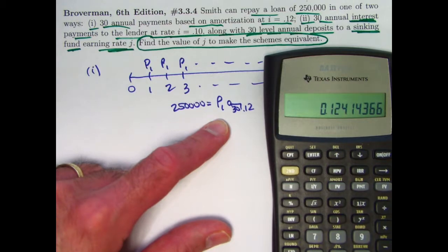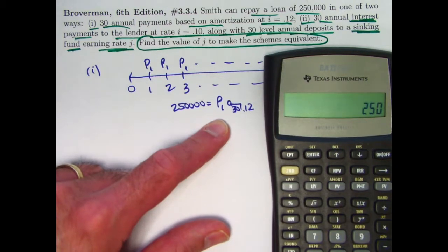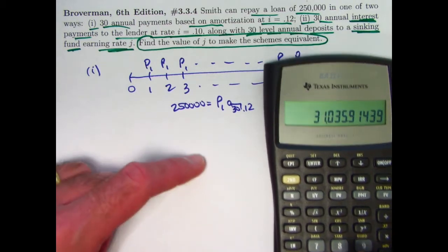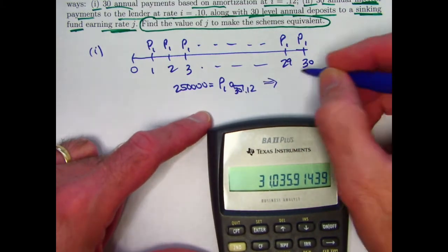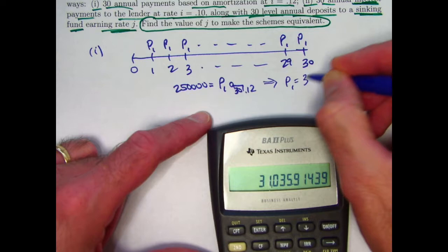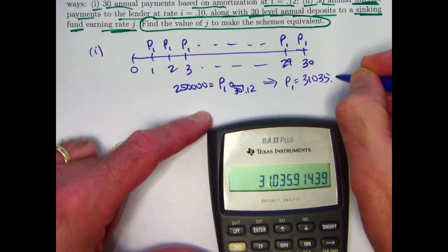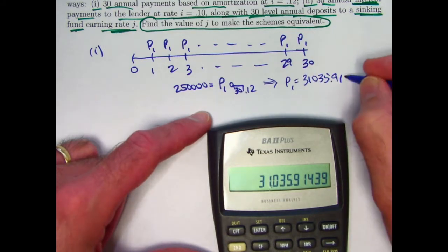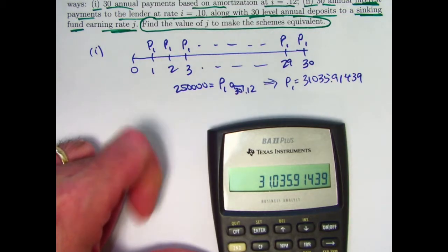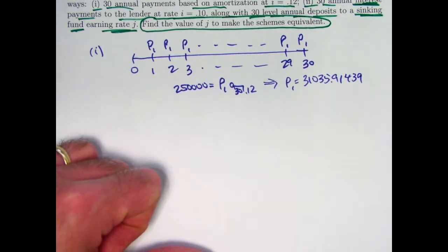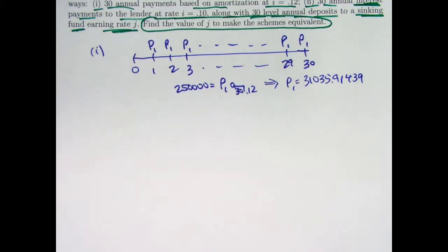Take the reciprocal of that and multiply it by 250,000. The payments are kind of high every year, but that's the way this problem is. P1 is $31,035.91 if you round it, but I'm going to keep more decimal places to play it safe so my errors don't compile on themselves. Alright, so that's what the situation is for payback scheme 1.